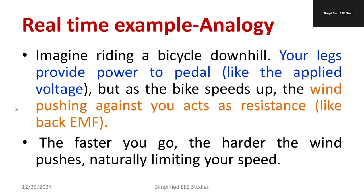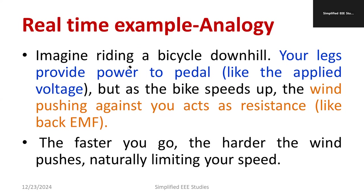Consider a real-time example: imagine you are at a hilltop and running downhill very fast. As you run faster, the wind will oppose your motion. Initially, when you are at a standstill, wind speed is very low. But whenever you go very fast, the wind opposes and regulates your excess speed. Similarly, when riding a cycle downhill from a hill station, the wind opposes your direction as you go faster. That is exactly what happens in the case of back EMF in a DC motor.